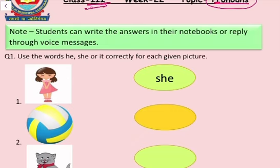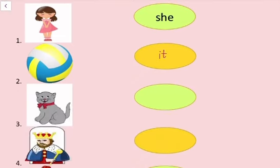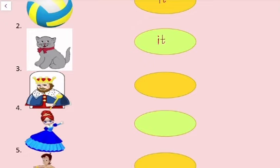Second picture, ek ball ki hai, ball ke liye hum it use karenge. Third picture, ek cat ki hai, cat ke liye hum it ka use karenge. Fourth picture, ek king ki hai, king ke liye hum he use karenge.